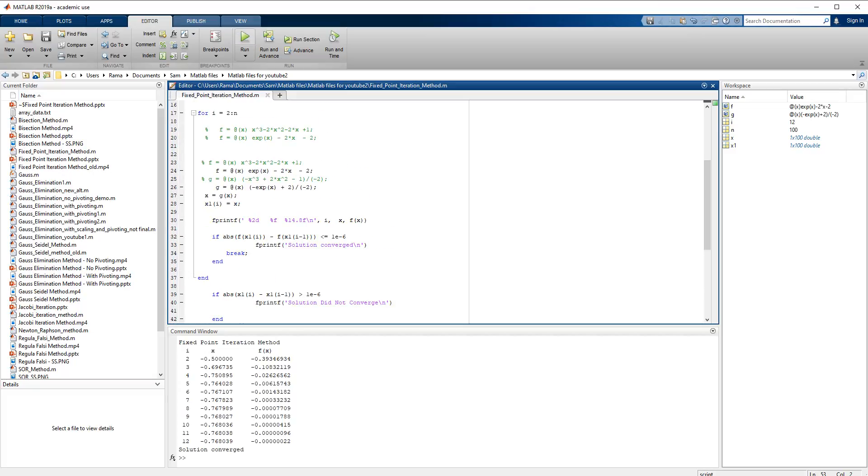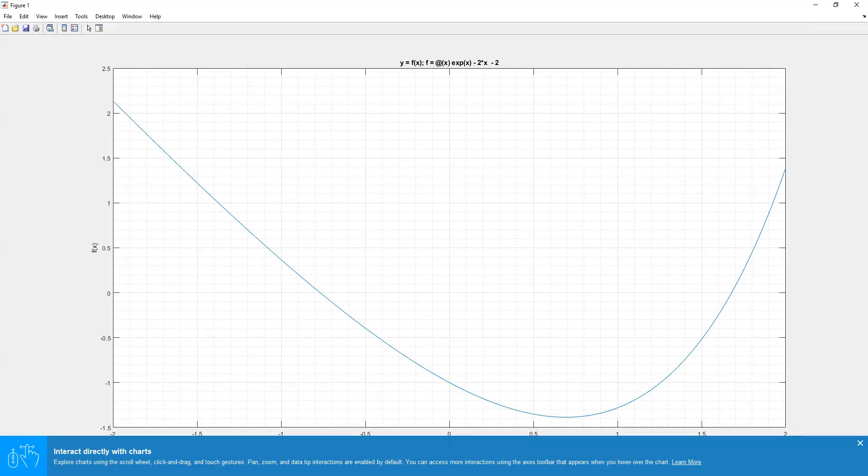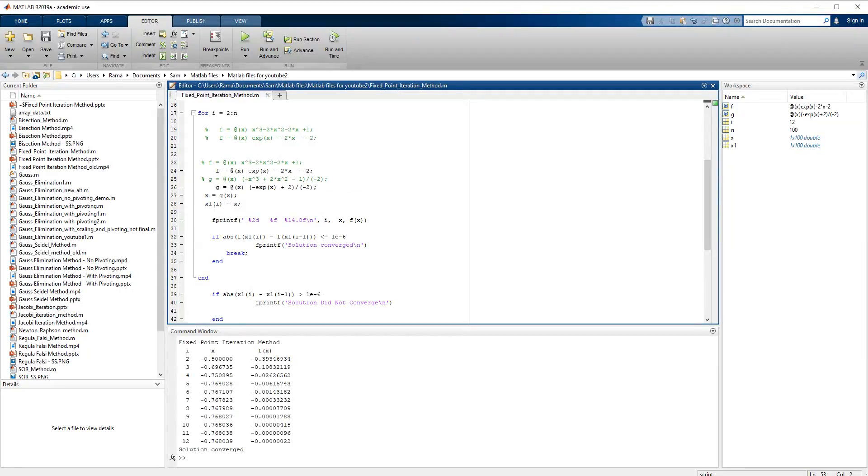We run this program for the transcendental equation and we got the solution in 12 iterations. The root came out as -0.768039, and at this value f(x) is very close to 0. We can look at it graphically, and although there are two roots we were able to find only one root in this case, which is close to -0.747. Again, the numerical solution we obtained is more accurate than the graphical values we looked at.